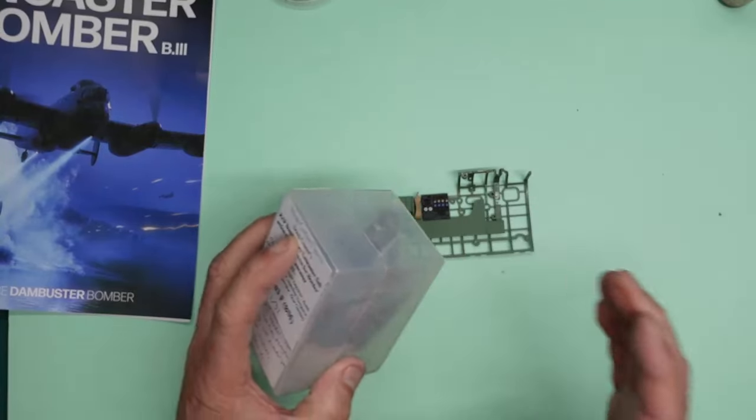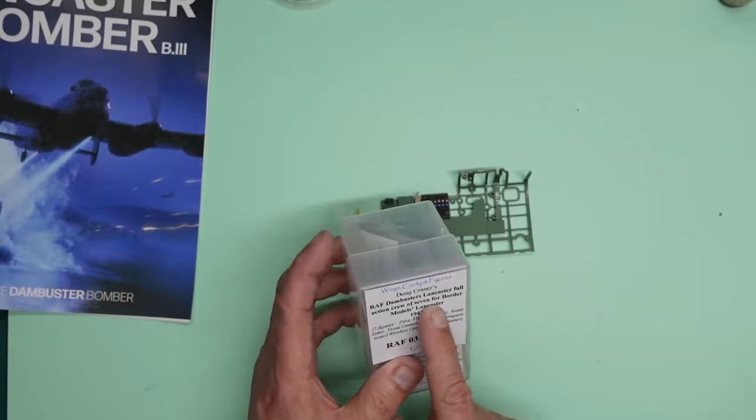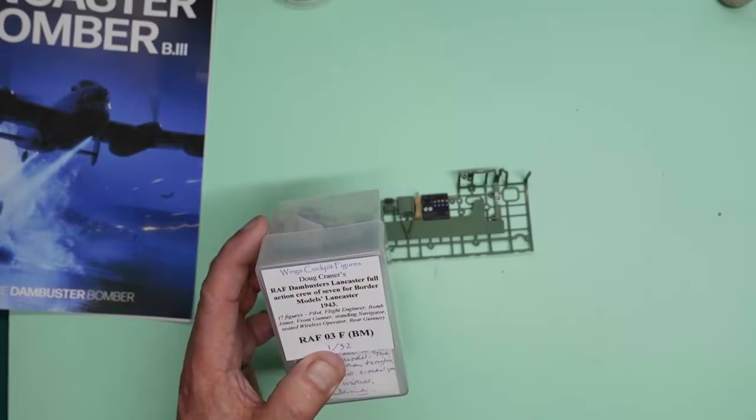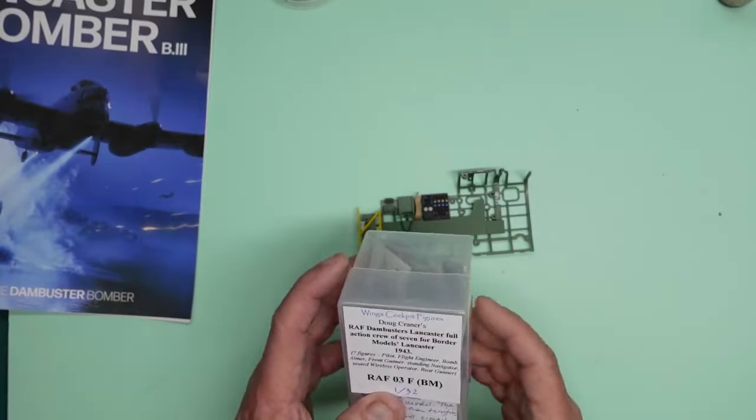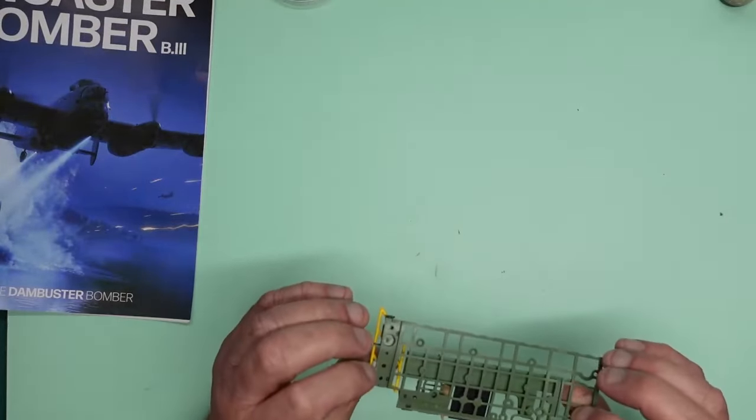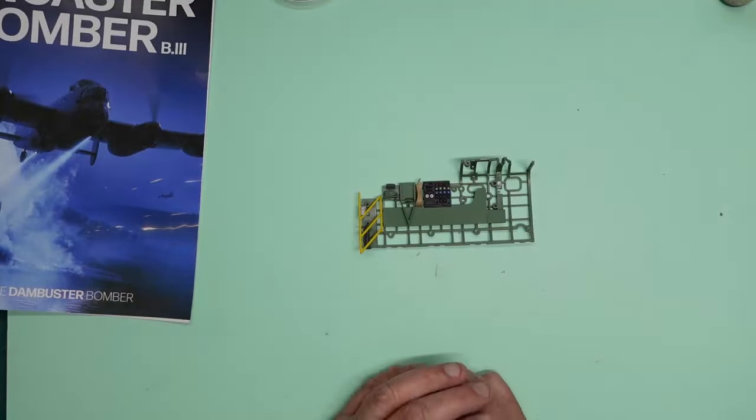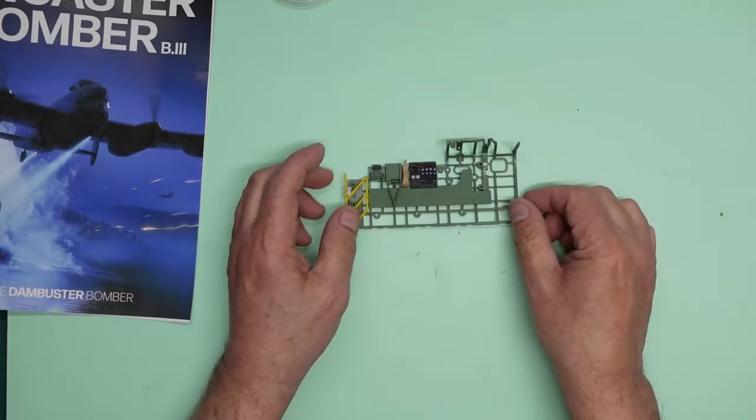But you might not want to waste your money on getting turret figures for the hatchet model. These are made to fit the border model Lancaster. There's also a set made to fit the Hong Kong models Lancaster. They will fit the hatchet kit, but the turret gunners, I think you're going to struggle with. So you have been warned. Just letting you know. Putting that out there. So as I said, I'm going to repeat myself a couple of times on that one. Just to make sure the message gets out there. I don't want you guys to go wasting your money and then finding you can't fit them in there at all. So thank you very much for watching. I'll see you all very very soon for part 8.